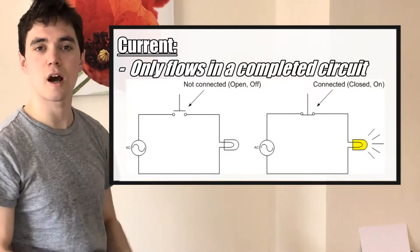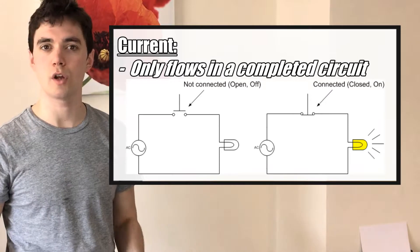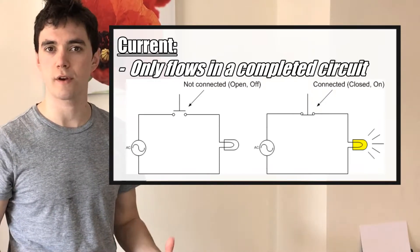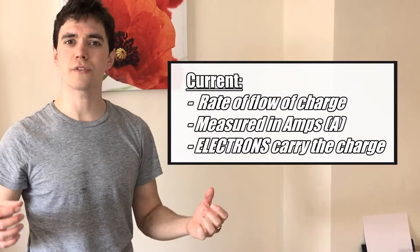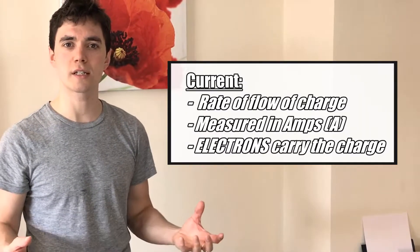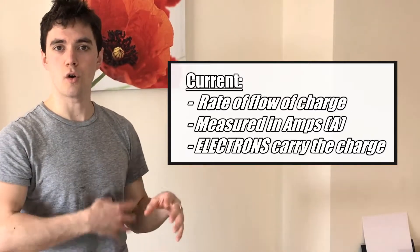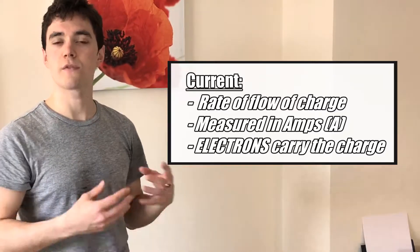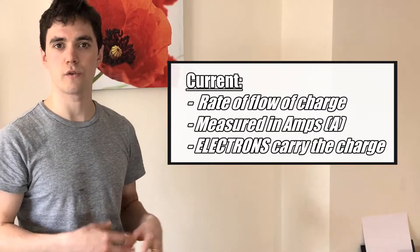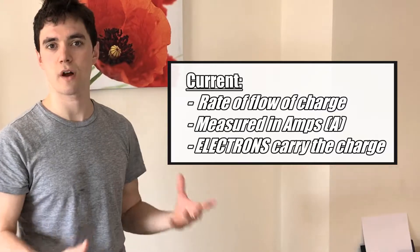Current cannot flow if the circuit is broken. So if I put a switch in and open the switch, because there's a gap in the circuit, the current will not flow — no electricity will flow. So think of the current as the flow of charge around the circuit, or the flow of electrons around the circuit.